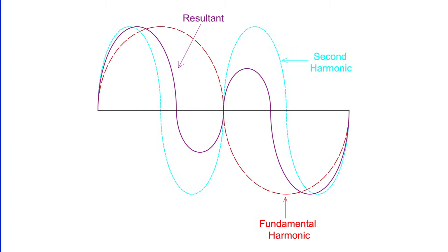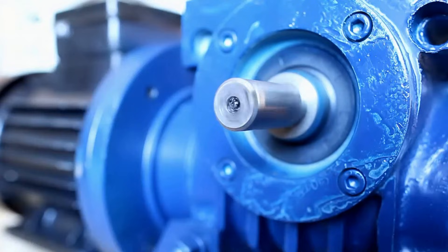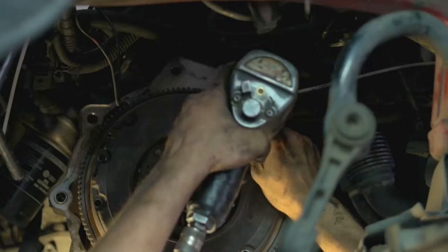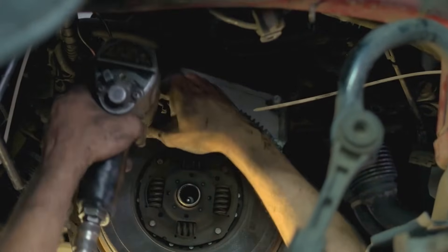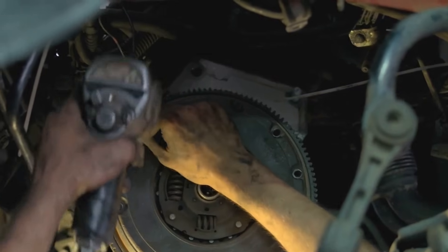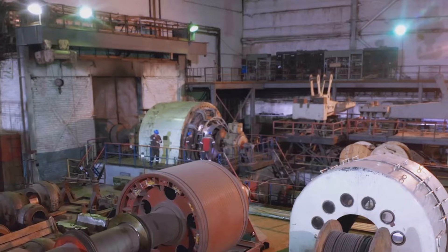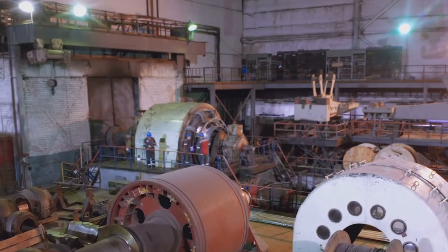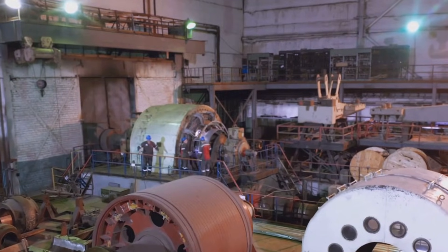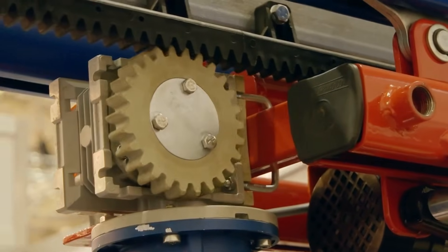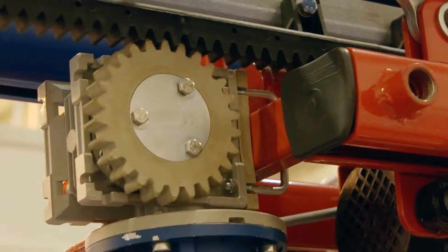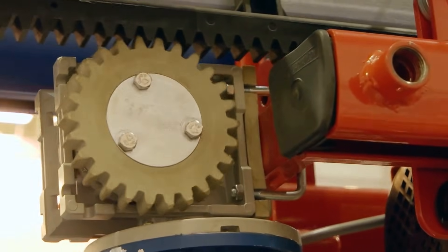This creates a reverse direction in the wave, which results in a negative sequence current flowing in the electrical circuit. This negative sequence current opposes the rotating magnetic field in induction motors. What's the result of this opposition? It's a reduction in mechanical torque. Less torque means less power to do the work we need from our motors. This second harmonic with its negative sequence is a key player in the distortion of our waveforms, impacting the performance of our electrical systems.